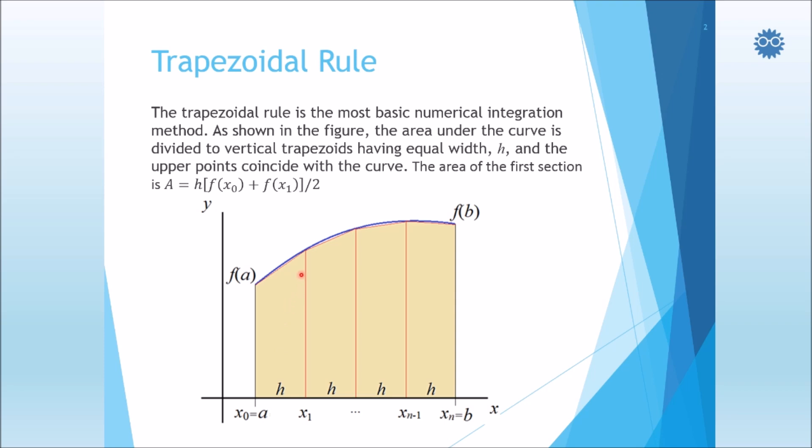Now each area can be computed by this simple formula, which is h multiplied by f of x sub 0, corresponding to the first side, plus f of x sub 1, corresponding to the second side, all divided by 2.